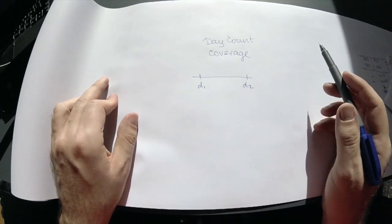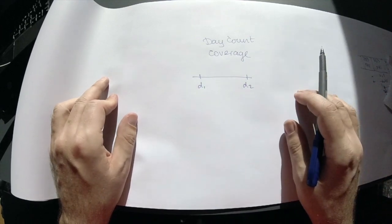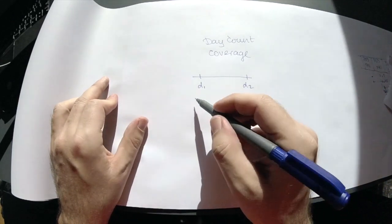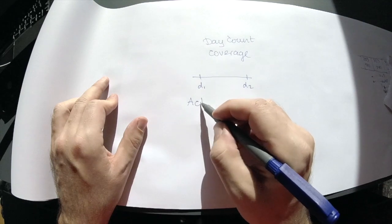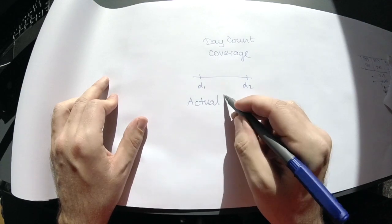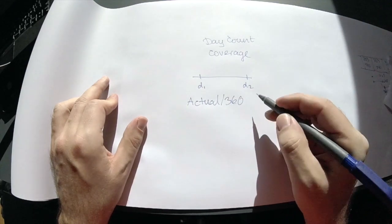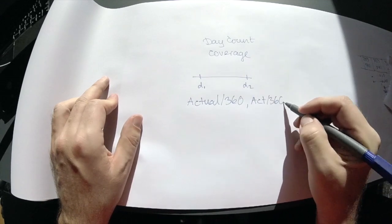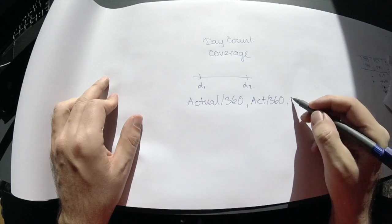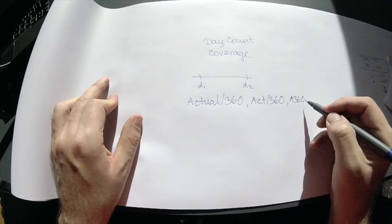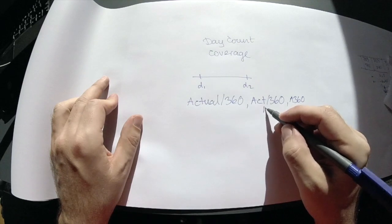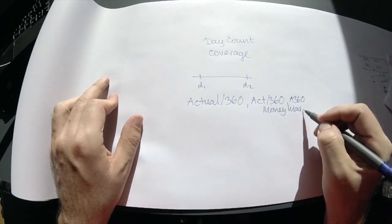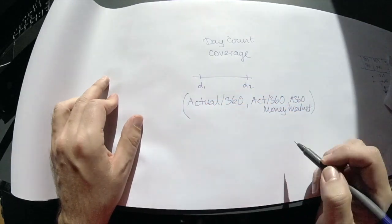In this video, we'll focus on the different names for essentially the same conventions. One of the most commonly used is the Actual/360. It's also often called just Act/360, or in short A360, or sometimes the money market convention. Those names are all equivalent.